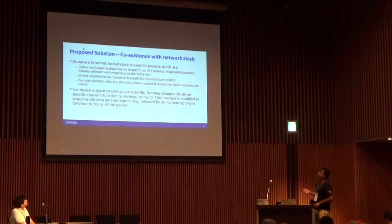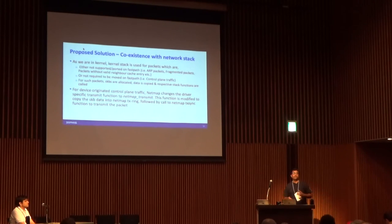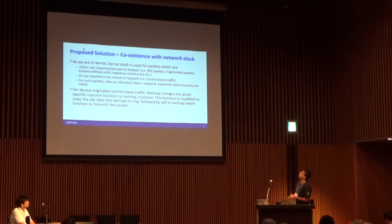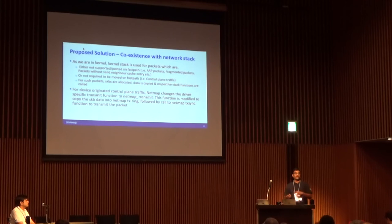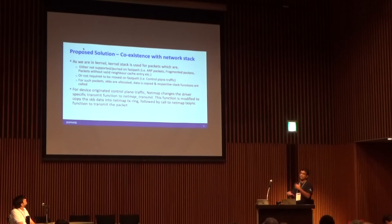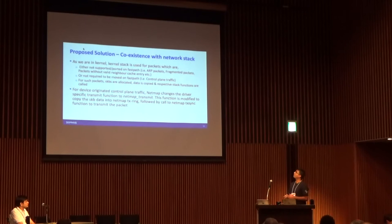Since we are in the kernel, the kernel stack is still used for packets that are not supported on the fast path or not required to be on the fast path — like control path access, protocols that are not inherently fast such as ARP packets or fragmented packets, where we have the current limitation that we cannot queue the packet. If something is not supported on the fast path, it simply goes to the kernel.